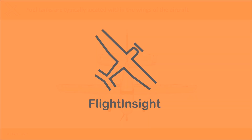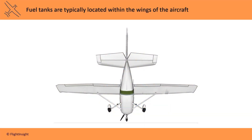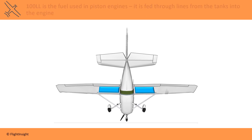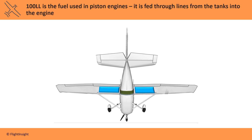Fuel tanks are typically located within the wings of the aircraft. Piston engines use a type of fuel called 100 low lead. This fuel is of a high enough octane to allow for an even combustion of the fuel-air mixture in the cylinders. If a lower grade of fuel is used, it can cause detonation at high power settings like on takeoff, where the mixture ignites instantaneously instead of burning evenly.